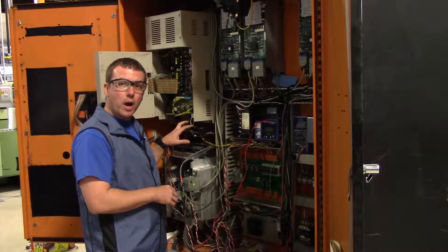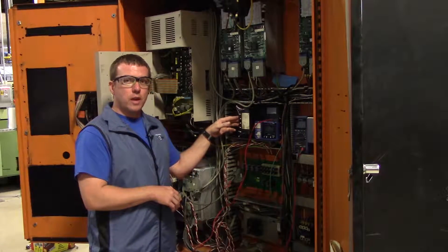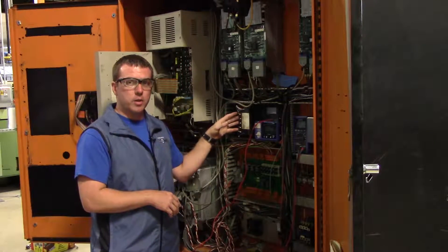You only have three wires—UVW—that go to this contactor, and then you have six wires that go up to the motor: UVW ZXY.